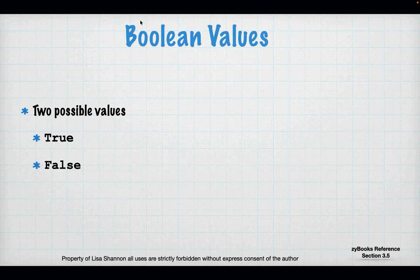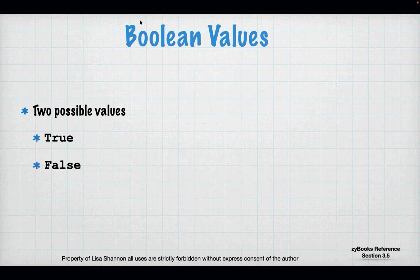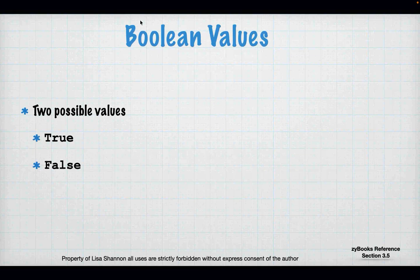There are Boolean values, and there are only two: true and false. This is why computers are stupid. When you ask Python a question, you will only ever get back one of two answers — true or false. It doesn't matter how complex the question is; it always comes down to a single value. There is no in-between, no fuzzy between true and false. As programmers, we have to structure our questions so that a true or false answer is meaningful.